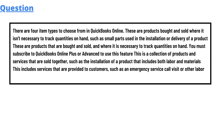The first are products bought and sold where it is not necessary to track quantities on hand, such as small parts used in installation or delivery of a product. The second are products that are bought and sold where it is necessary to track quantities on hand. You must subscribe to QuickBooks Account Plus or Advanced to use this feature.